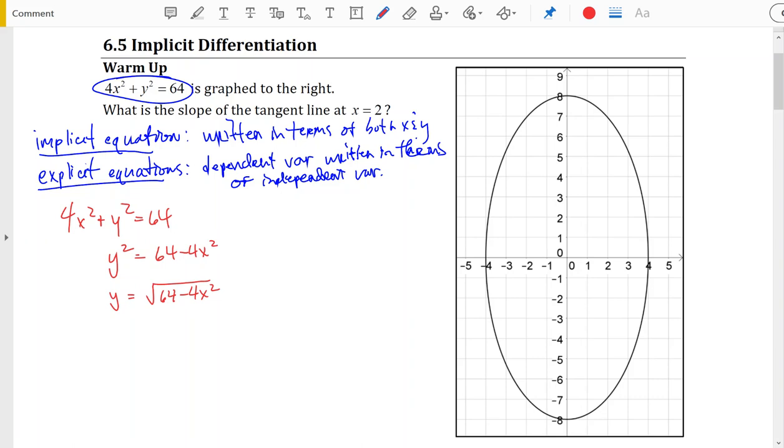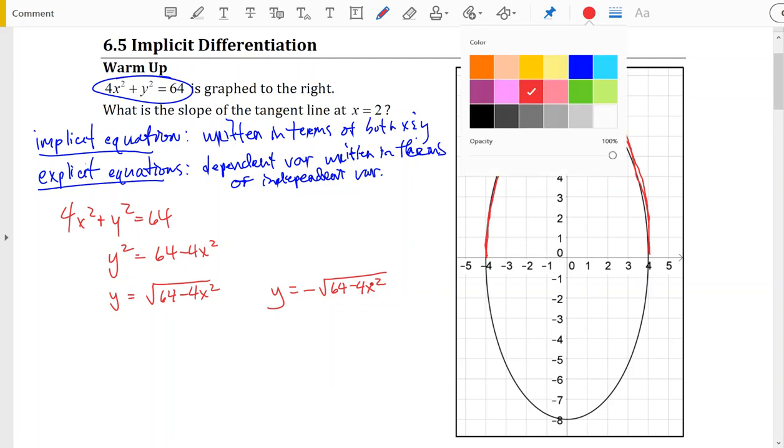Now the problem with this now explicit form of our equation is that it actually only represents half of our ellipse. And that's because when we take the square root of both sides we have to remember that there are two different possible outcomes: one is the positive square root and the other is the negative square root. So we actually get both of these versions of explicit. So it doesn't translate very cleanly into an explicit equation, but it turns out we can still solve the derivative this way.